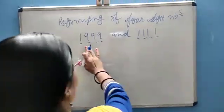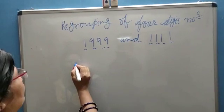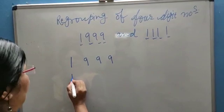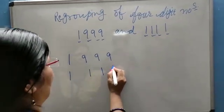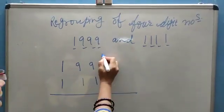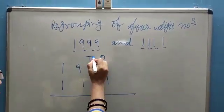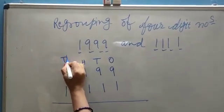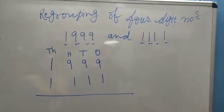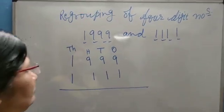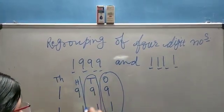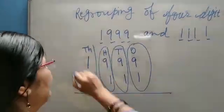Place these two numbers in a vertical column: 1,999 and 1,111. One stands for hundreds and thousands. This is ones place, this is tens place, this is hundredths place, and this is thousandths place.